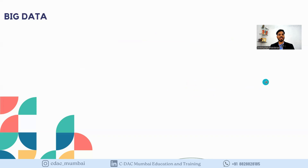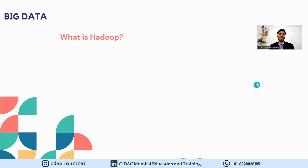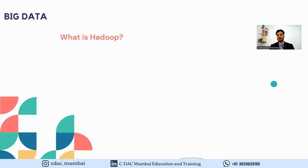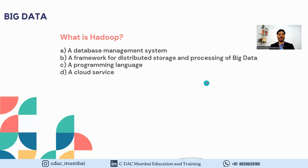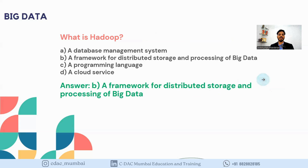The next question is related to frameworks — specifically Hadoop. The question is: what is Hadoop? Options are: A) A database management system, B) A framework for distributed storage and processing of big data, C) A programming language, D) A cloud service. The answer is B — a framework for distributed storage and processing of big data.